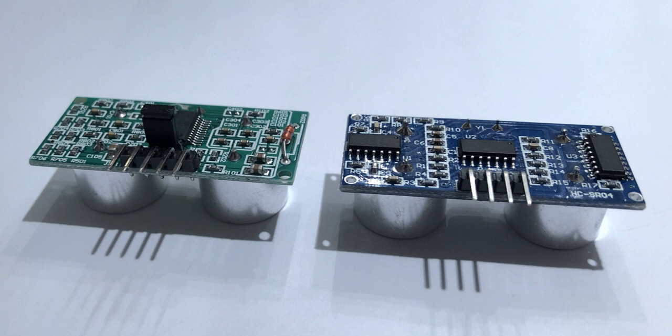First, the US100 has a jumper on the back side. This jumper controls whether it's in UART mode and delivers distance measurement and temperature over serial communication, or if you have to trigger the transmitter and receiver, and do the counting or timing ourselves. I will refer to this mode as manual mode in the rest of the video.